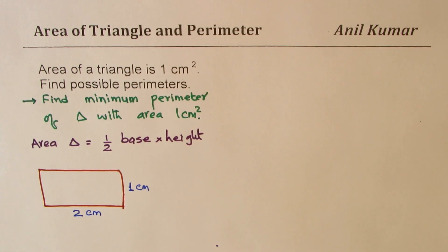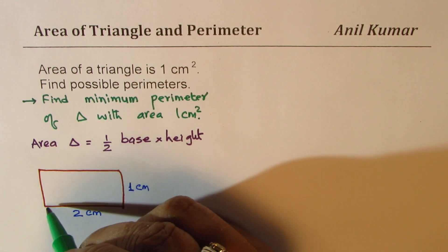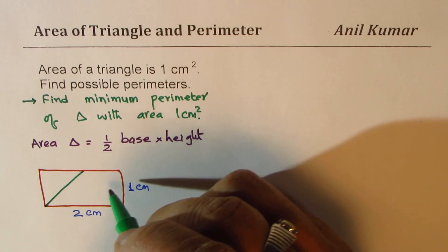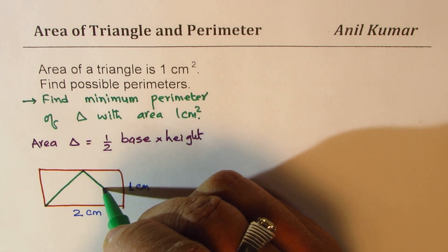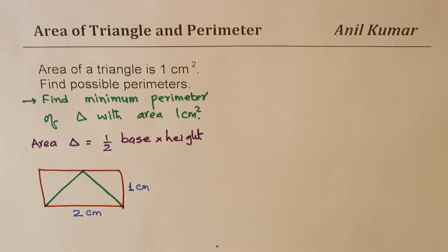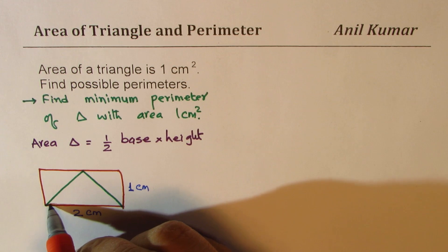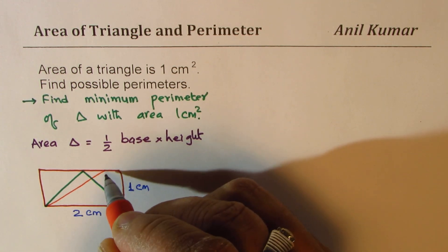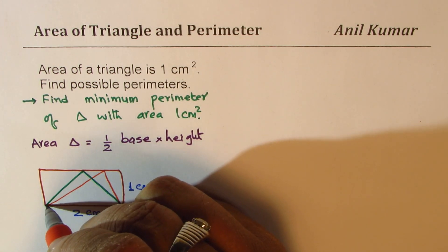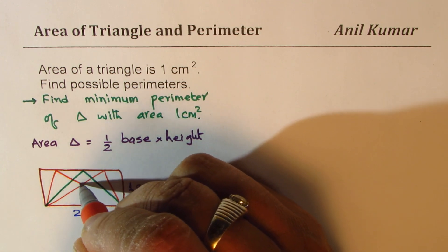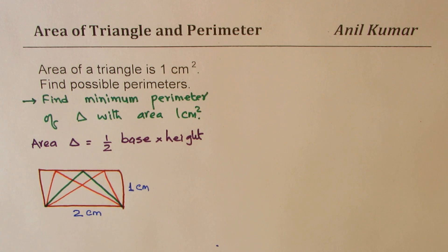If I take a rectangle whose base is two and height is one centimeter, any triangle I make will have area of one centimeter square. So this rectangle, which has area of two centimeters square will have a triangle with area of one centimeter square.